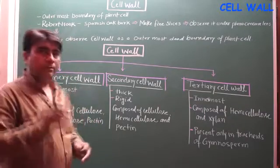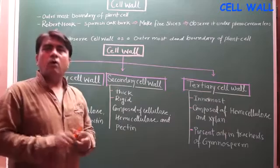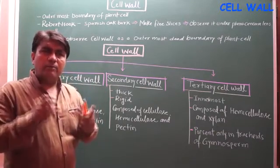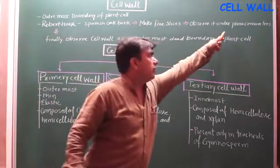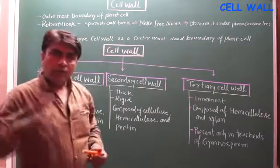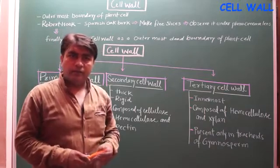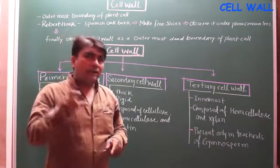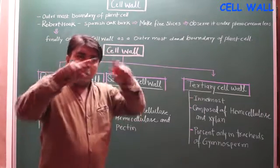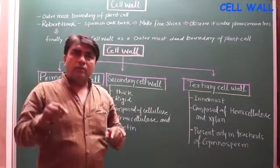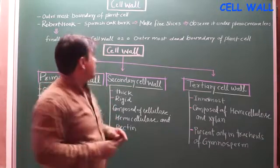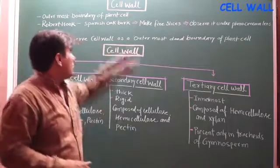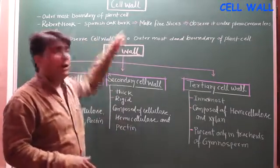Robert Hooke was the person who first observed the cell wall under a very crude, simple microscope. He used planoconcave lenses, and with the help of these planoconcave lenses he observed this outermost boundary of the cell. He observed the outermost wall — that is, the cell wall — by slicing the Spanish oak bark.